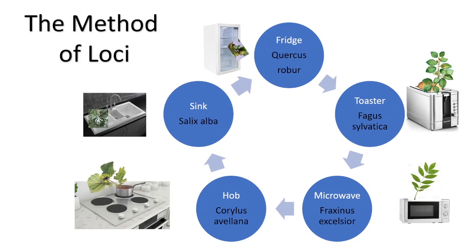You've created a series of locations and attached a plant to each one. When you need to recall them, you think: what about the hazel? Oh yeah, the hazel — that was on the hob. Or a beech tree — that was the toaster. Fagus sylvatica by the toaster. The method of loci or memory palace helps you learn plant names by making more connections in your brain. The more crazy the story, the better.